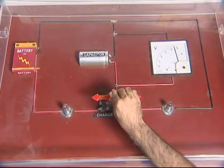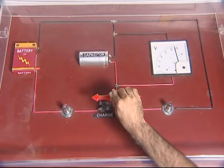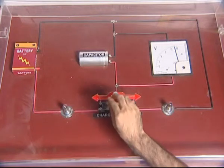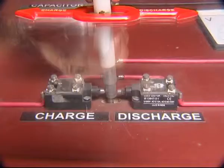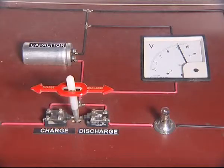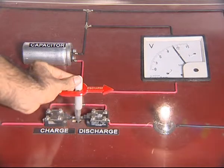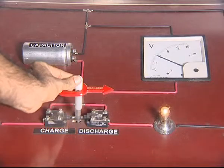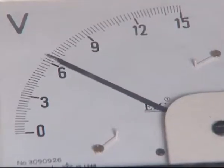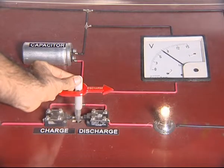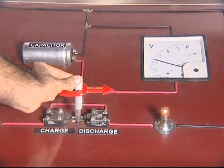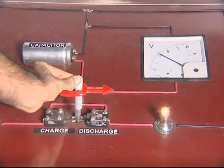When the capacitor is being discharged, charge flows out of it and into the circuit. Initially, it's at a very high voltage, which makes the bulb glow brightly. But as the voltage across the capacitor goes down as the capacitor discharges, the bulb also glows less brightly.